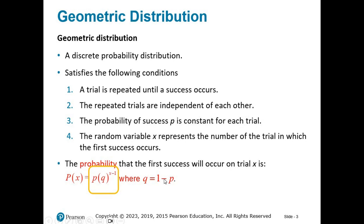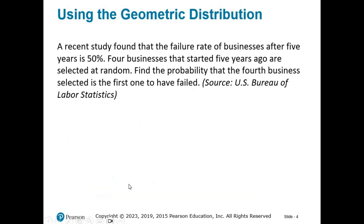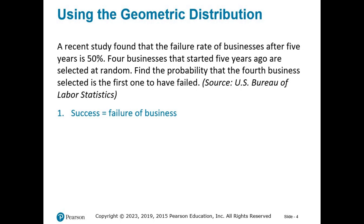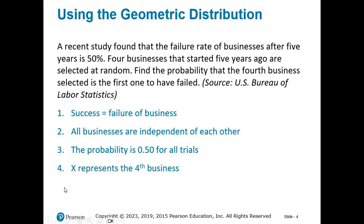A recent study found that the failure rate of businesses after five years is 50%. Four businesses that started five years ago are selected at random. Find the probability that the fourth business selected is the first one to have failed. We need to verify it's a geometric distribution. The success here is when a business fails. The trials are independent, the probability of success is constant at 0.5, and X equals 4 — the trial on which the first success occurs.